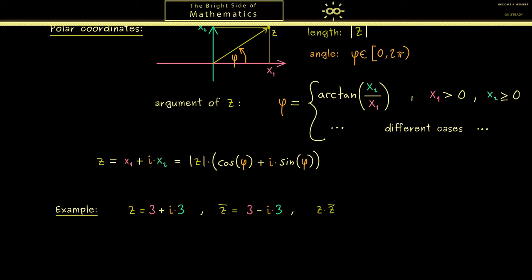This is not hard to see. This gives us 9 plus 9 so 18. Therefore the absolute value of z is the square root of 18. Which can be rewritten as 3 times the square root of 2.